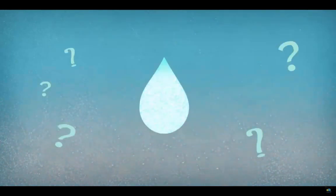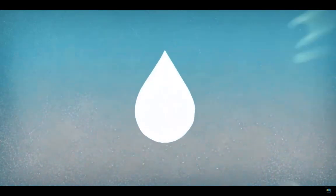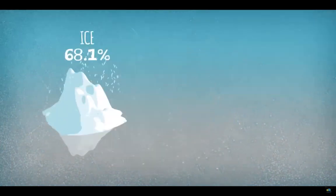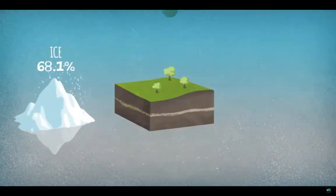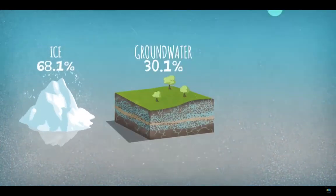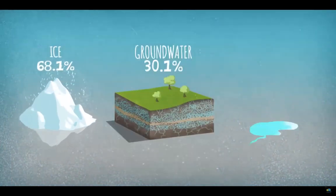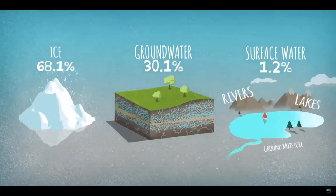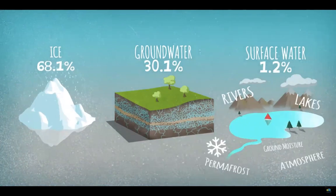So where is this water and how much is there of it? About 70% is in the form of ice, 30% is groundwater, and lastly only 1.2% is surface water, namely rivers, lakes, ground moisture, permafrost, and water present in the atmosphere.